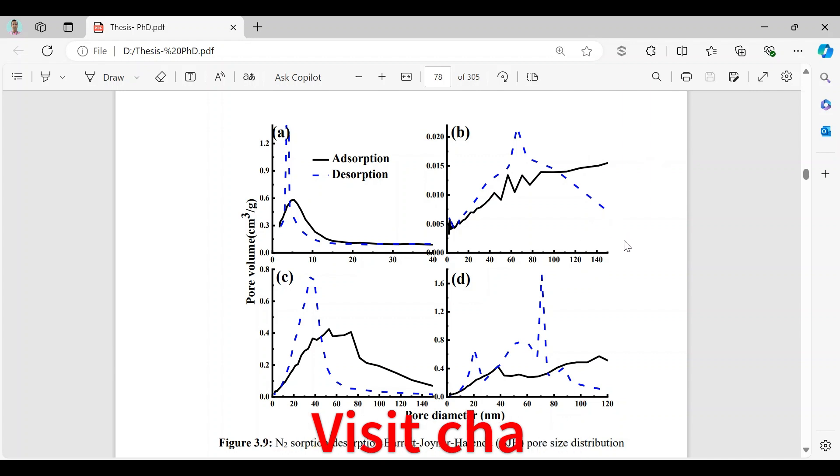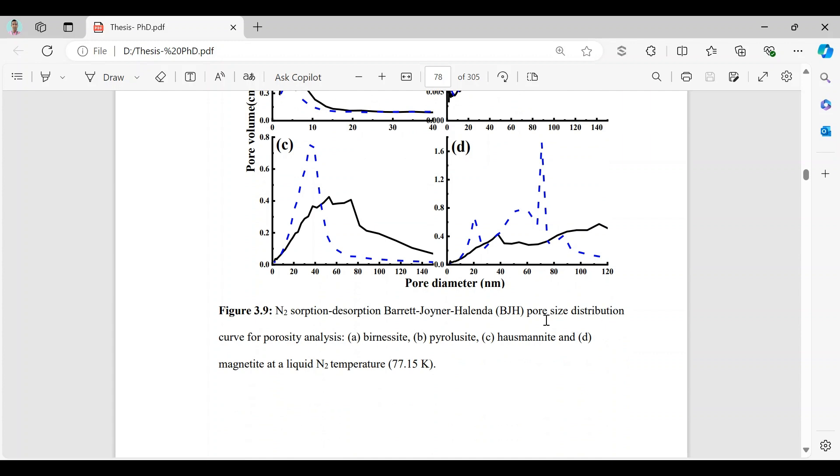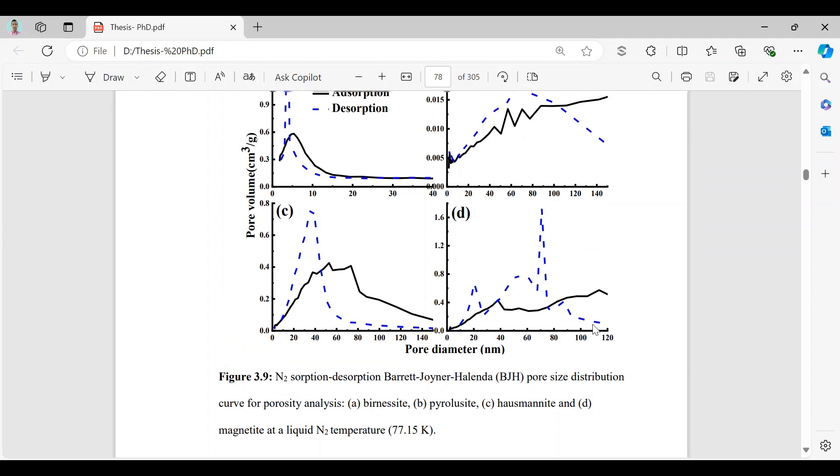Let us consider a real example of the absorption and desorption curve for number one barnesite, then pyrocite, hosmanite, and magnetite.